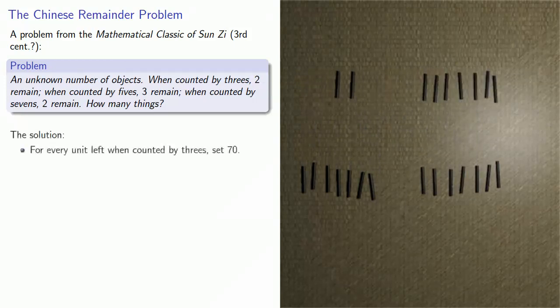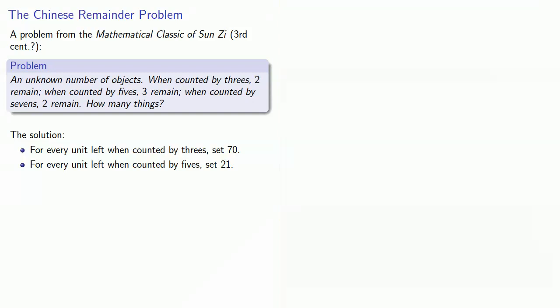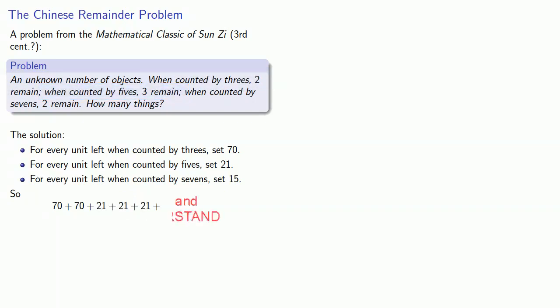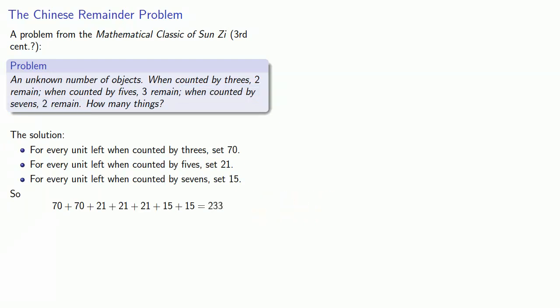Sun-Zi's solution: for every unit left when counted by threes, set 70; for every unit left when counted by fives, set 21; and for every unit left when counted by sevens, set 15. Since we have two left when counted by threes, we'll set down two seventies. Since we have three left when counted by fives, we'll set down three twenty-ones, and since we have two left when counted by sevens, we'll set down fifteen twice. We'll add and subtract 210 to obtain twenty-three, the answer.